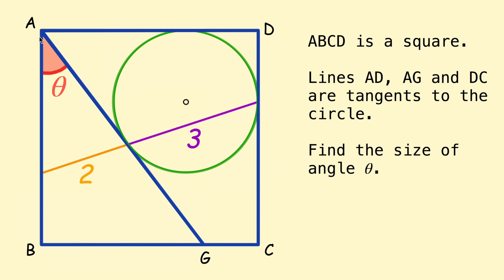Also I should have said we're also given in the diagram that this line here is split into the ratio 2 to 3 by the straight line AG.